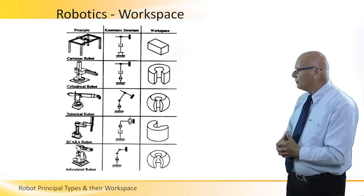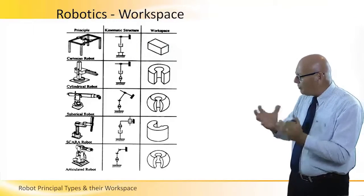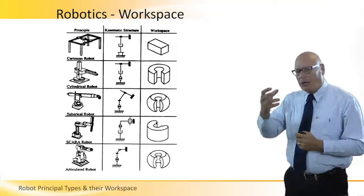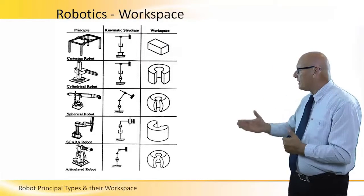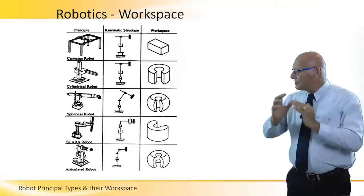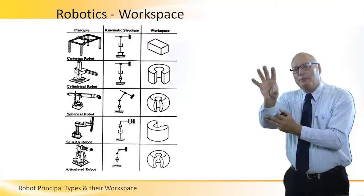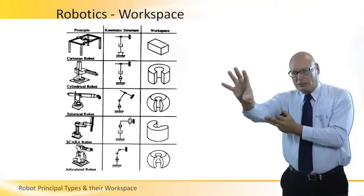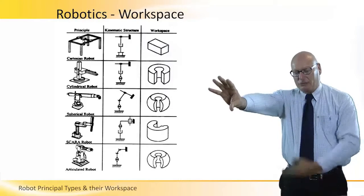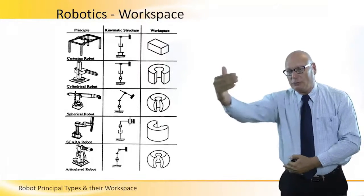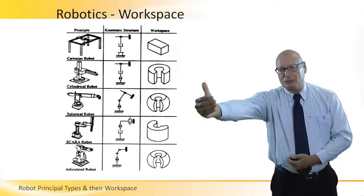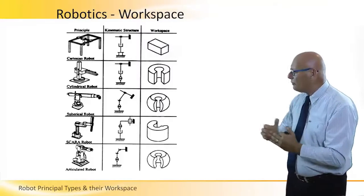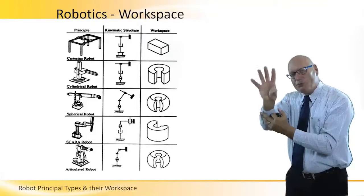Here is a summary of the workspace of each robot type. The Cartesian robot — the XYZ robot — has a cubical, rectangular three-dimensional working space. The cylindrical robot has a cylindrical workspace. The spherical one is similar to the cylindrical, except because we have the pitch of the end effector it can rotate perpendicular to the main line, making its working envelope somewhat wider than cylindrical.